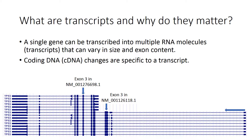Now I will talk more about transcripts and why they are important. A single gene can be transcribed into multiple RNA molecules or transcripts that can vary in size and exon content. Therefore, coding DNA or cDNA changes are specific to a transcript. This picture shows several transcripts for the TP53 gene. Transcription is initiated from the right side of the screen, and you can see several transcripts resulting from two different transcription start sites.